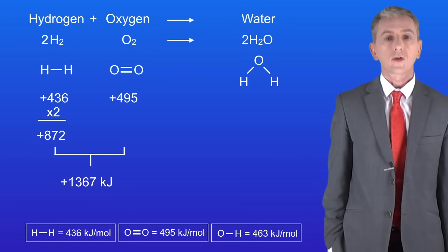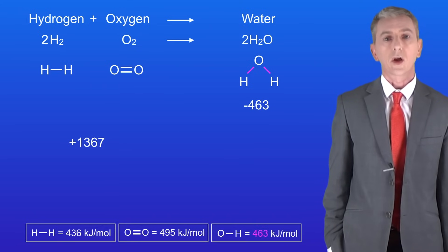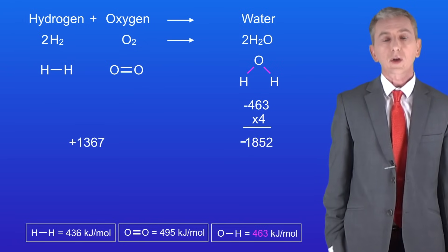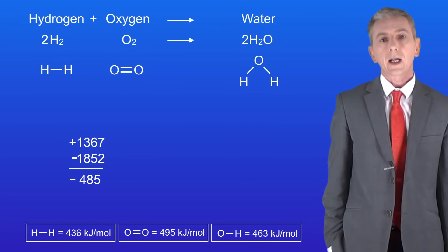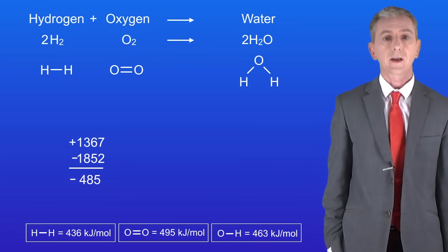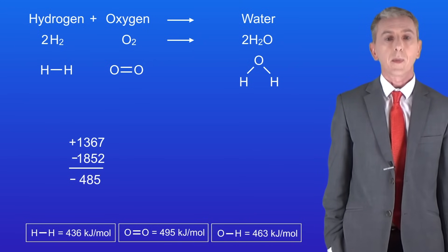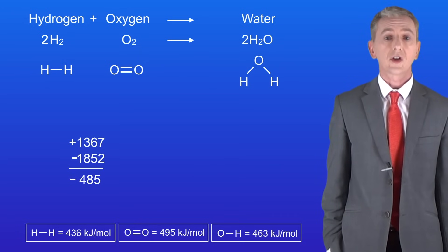The bond energy for an oxygen to hydrogen bond is 463 kilojoules per mole. We need to make this negative because we're making this bond, and making bonds is exothermic. Each water molecule has two of these bonds and we've got two molecules of water, so we've got four of these bonds in total. Multiplying minus 463 by 4 gives us a total energy value of minus 1852 kilojoules. To calculate the overall energy change we subtract 1852 from 1367 kilojoules, giving us a total of minus 485 kilojoules. This shows that the reaction is exothermic as energy has been released.